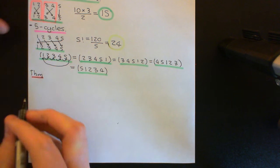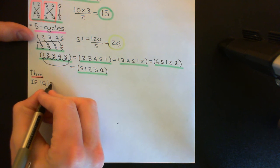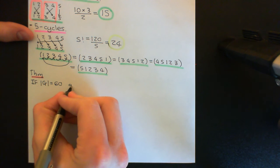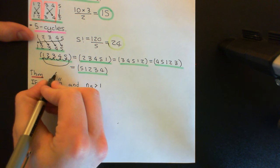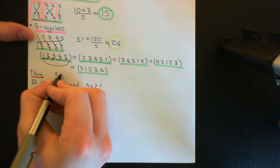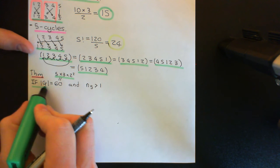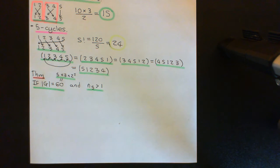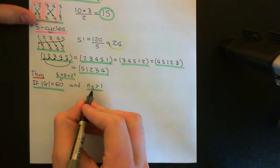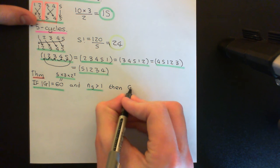The theorem that we're going to prove is that if we have a group of order 60 — which we'll call capital G — and the number of Sylow 5-subgroups, which I'll denote N5, is greater than 1, then G is simple. The prime factorisation of 60 is 2² × 3 × 5, so you will have Sylow 5-subgroups of order 5 in any group of order 60 by the first Sylow theorem. So if you've got a group of order 60 and the number of Sylow 5-subgroups is greater than 1, the claim is that G is simple.